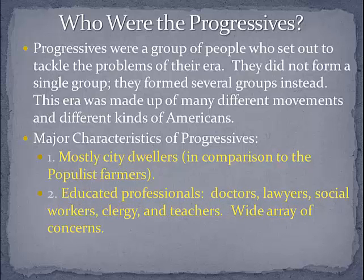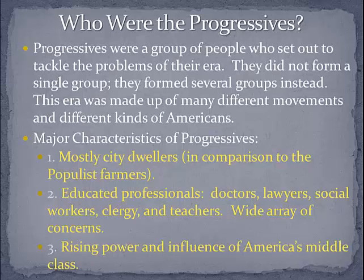We also see they come from the educated professional class of society. So many early progressives were doctors, lawyers, social workers, clergy, and teachers. You had a wide array of concerns and questions that these groups had. And finally, the third characteristic is a rising power and influence of America's middle class.